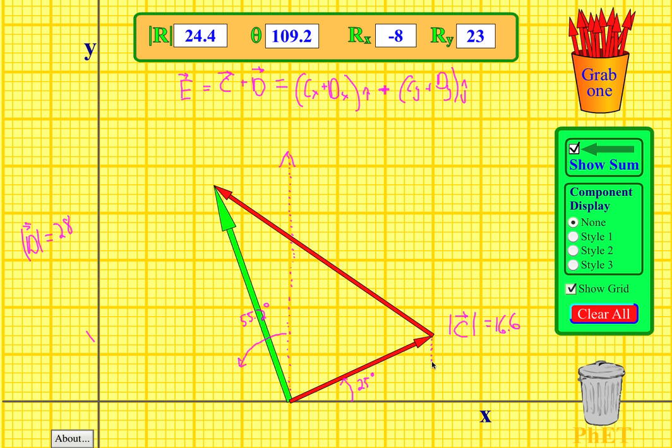Vector c, you can break it up into its parts. That's what component means, is part. That would be Cx, and this side would be Cy. We know how to do that. I have a right triangle, and I know the hypotenuse is the magnitude of the vector, 16.6. Cx would be the adjacent side. We can use SOHCAHTOA. I want the adjacent side and I know the hypotenuse, so we want cosine.